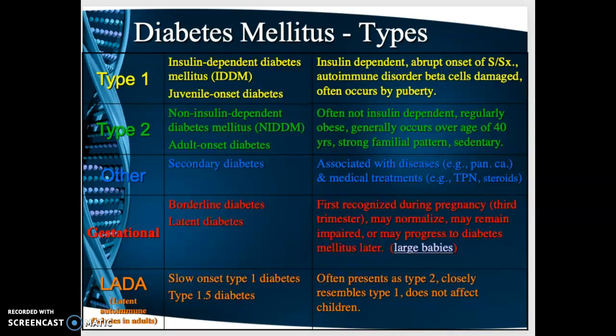Type 1 characteristics: the person is insulin dependent with usually an abrupt onset of signs and symptoms. It's an autoimmune disorder — the person has a genetic predisposition, is exposed to some environmental trigger (usually a viral infection), and this triggers the immune system to destroy beta cells within the pancreas. The immune system thinks those beta cells are foreign and attacks them, so the person produces no insulin. This often occurs before puberty — hence juvenile onset.